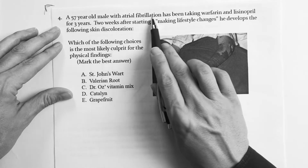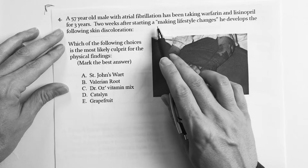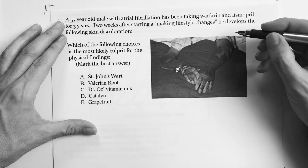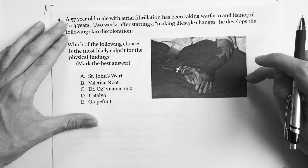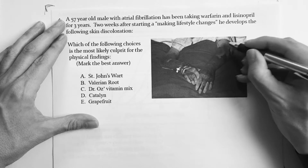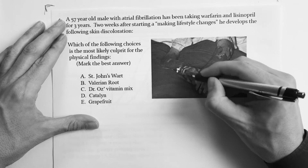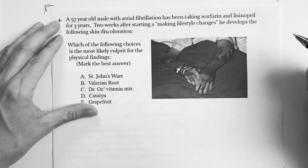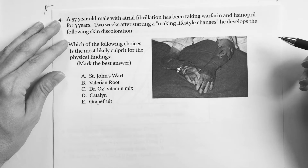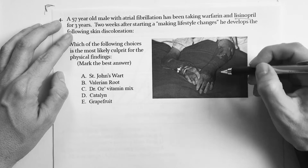This one says: a 57-year-old with atrial fibrillation has been taking warfarin and lisinopril for 3 years. Two weeks ago, after starting lifestyle changes, he develops the following skin discoloration. You can see excessive superficial bleeding — almost like bruising — all throughout the man's arms. It's pretty excessive.